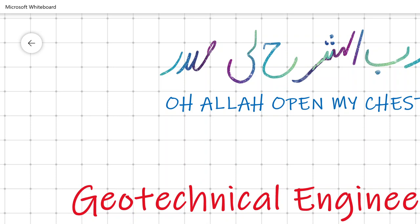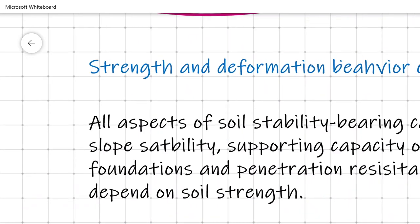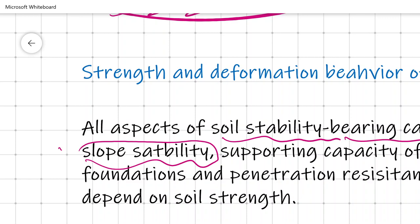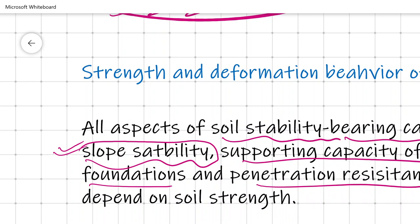The purpose of showing you these videos is to let you know the importance of this topic — shear strength. All the failures we have seen in the videos caused this catastrophe basically due to the shear strength of the soil. All aspects of soil stability — bearing capacity, slope stability, supporting capacity of deep foundations, and penetration resistance — all depend on soil shear strength.